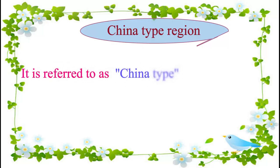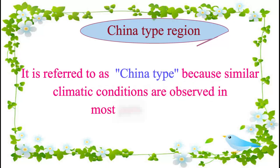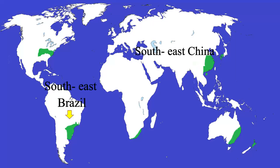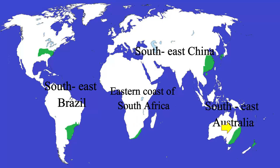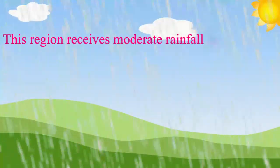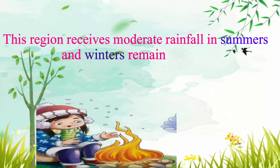The China-type region is referred to as China-type because similar climatic conditions are observed in most parts of China. This region includes South East China, South East Brazil, the Eastern Coast of South Africa, the South East area of Australia, and the South Eastern parts of the United States of America. It receives moderate rainfall in summers and winters remain dry.